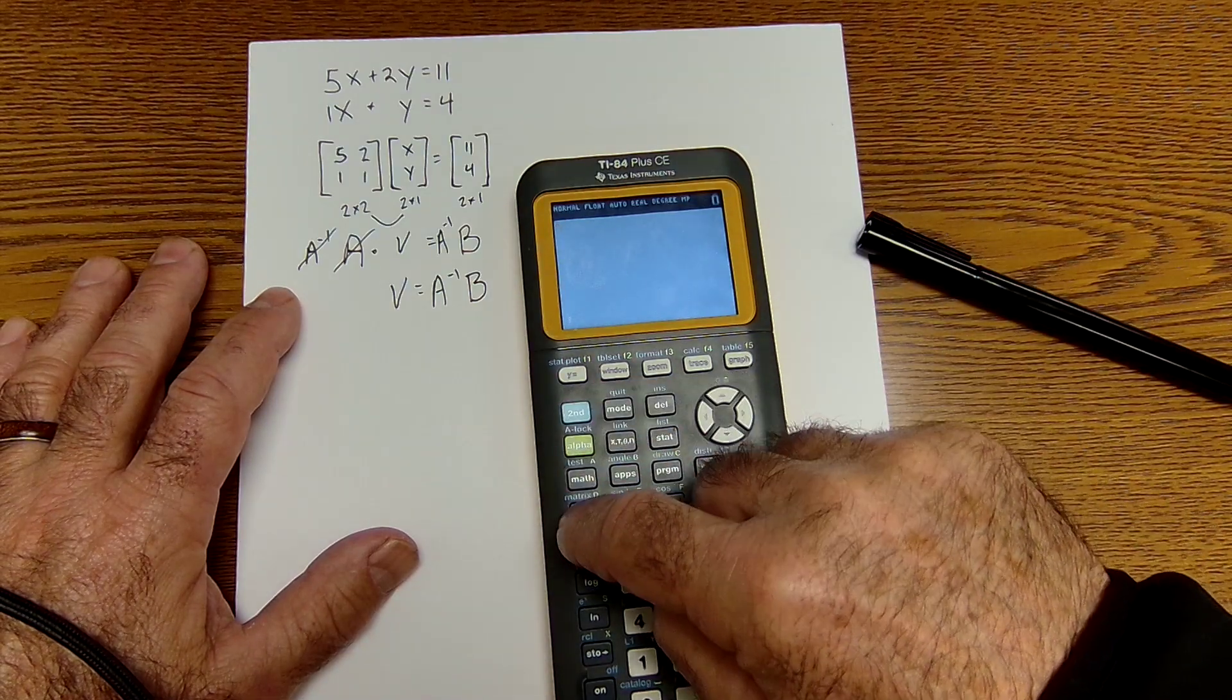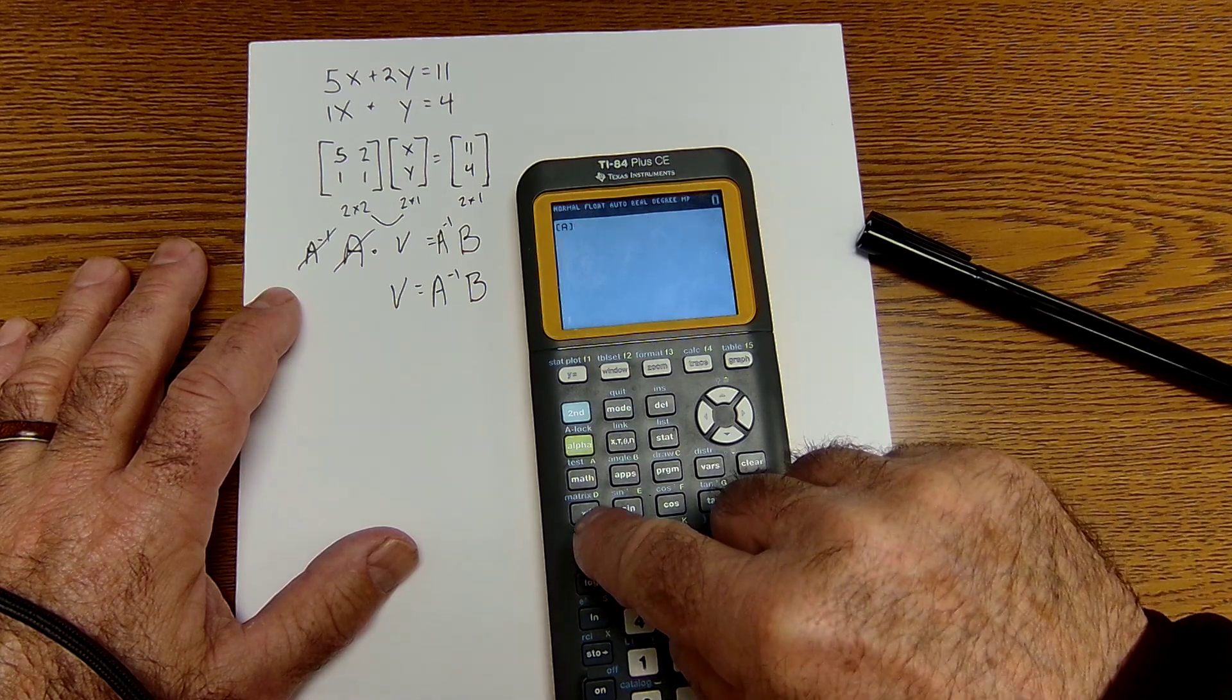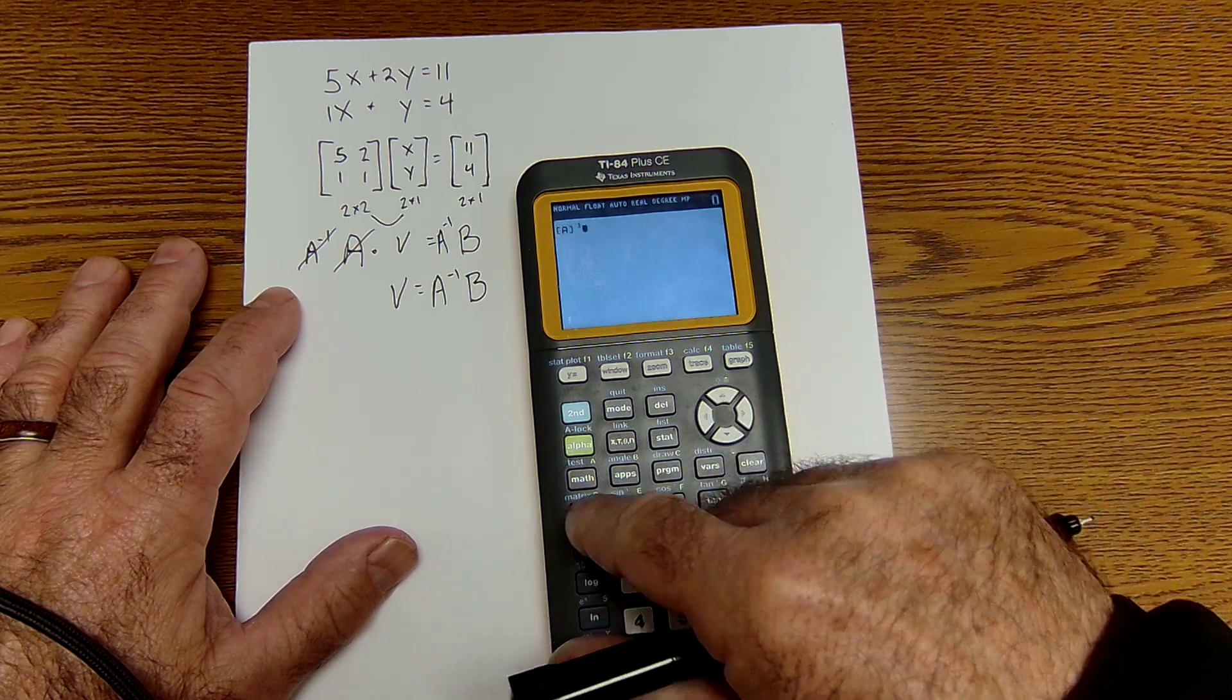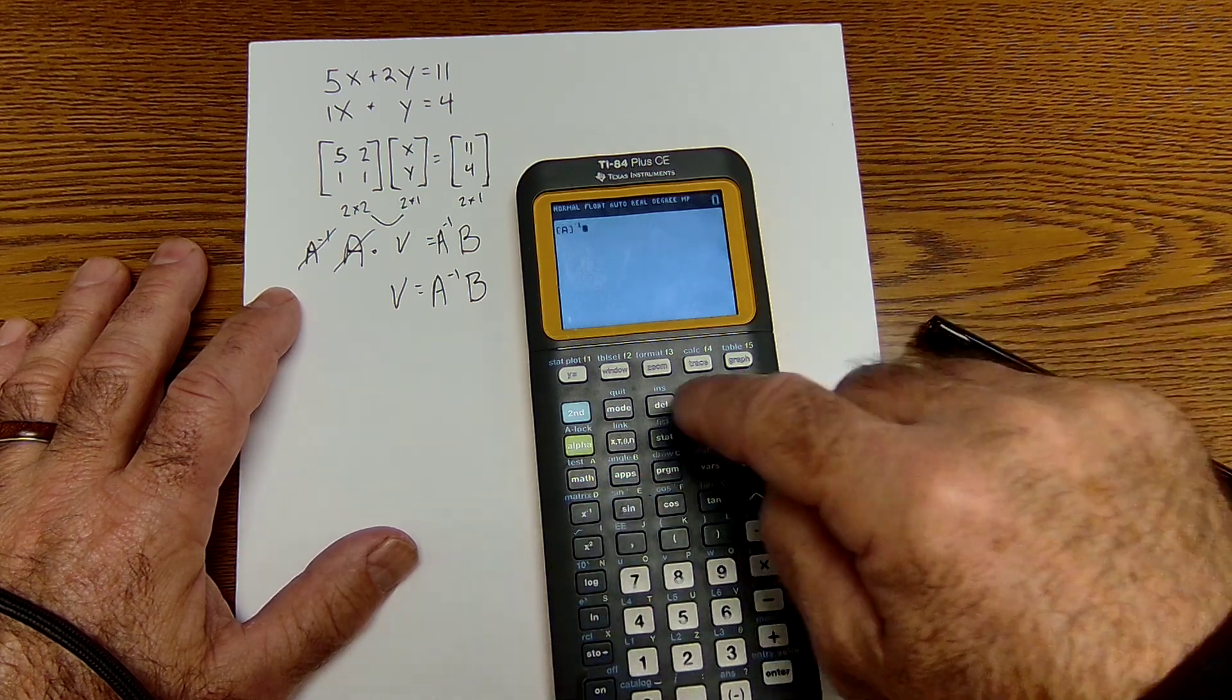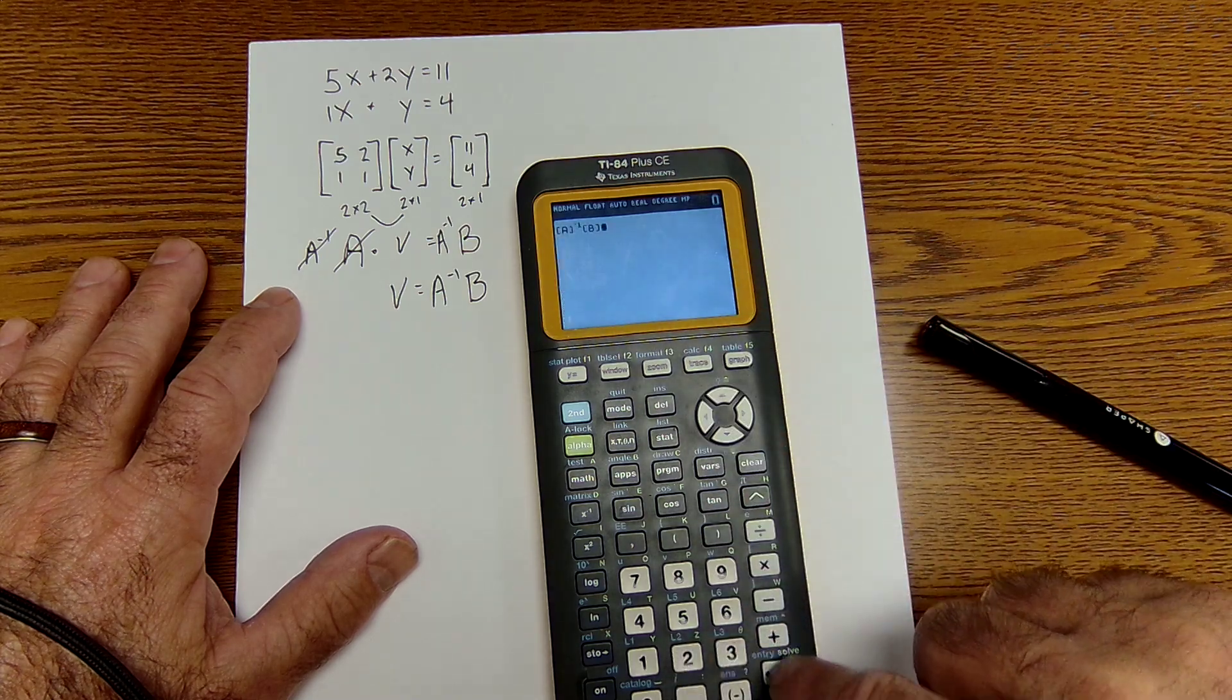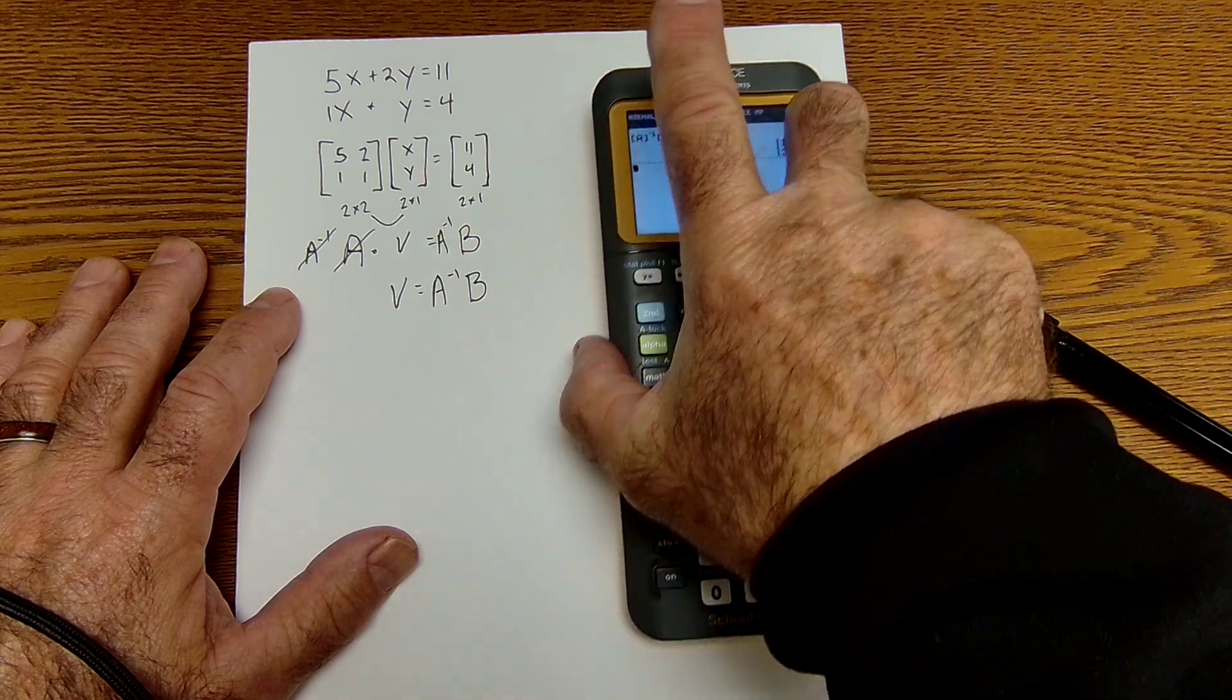So I'm going to go matrix. I want to select matrix A. I want to take the inverse of it. Here's the inverse button right here. So I have the inverse of A times matrix 2. So I have the inverse of A times B. And there's my solution, 1, 3.